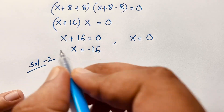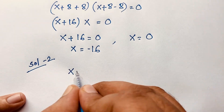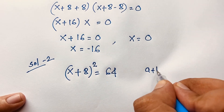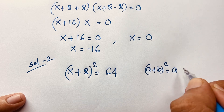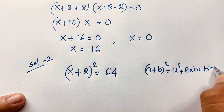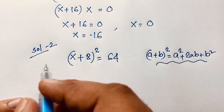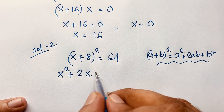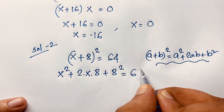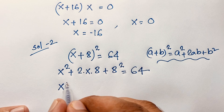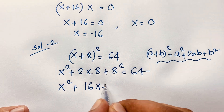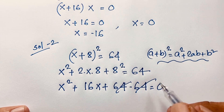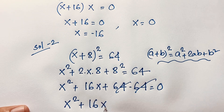For the second method: (x + 8)² = 64. Applying the identity (a + b)² = a² + 2ab + b², where a = x and b = 8, we get x² + 16x + 64 = 64. Moving 64 to the left side, it cancels out, giving x² + 16x = 0.